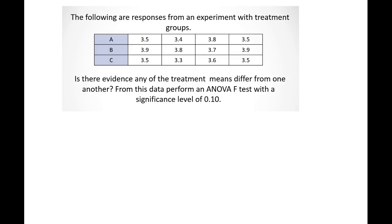The following are responses from an experiment with treatment groups A, B, and C. It looks like we have four measurements for each group. Is there evidence any of the treatment means differ from one another? From this data, let's perform an ANOVA F-test with a significance level of 0.10.